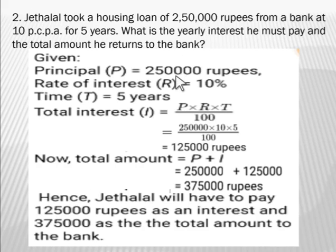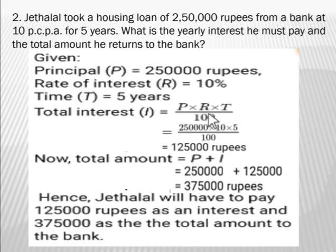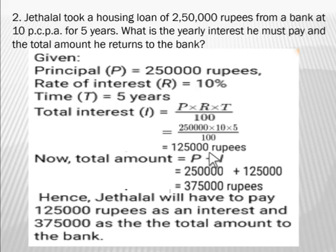What is given: principal P = 2,50,000 rupees; rate of interest R = 10% per annum; time T = 5 years. Using the formula: I = P × R × T ÷ 100 = 2,50,000 × 10 × 5 ÷ 100. Cancel the two zeros of 100 with two zeros of 2,50,000. On multiplying the remaining numbers you get 1,25,000 rupees as the total interest Jethalal has to pay to the bank.